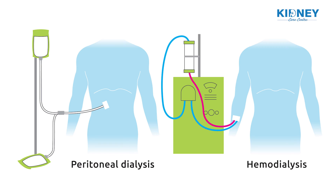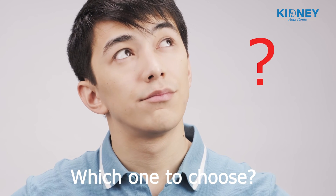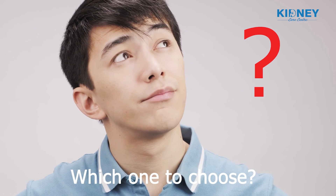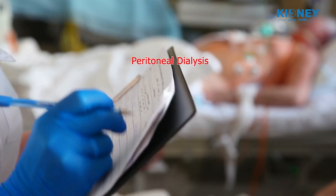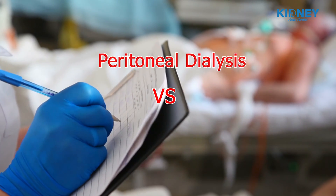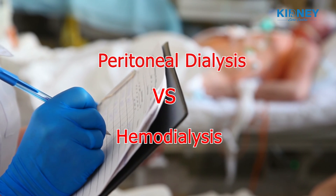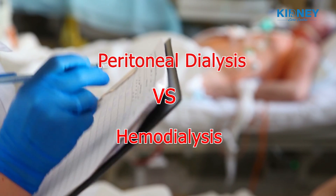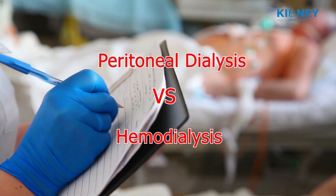Dialysis is of two types: hemodialysis and peritoneal dialysis. Among patients and their relatives, there is a lot of confusion about which is better and who should undergo which type of dialysis. Today we will discuss the difference between peritoneal dialysis and hemodialysis and what is suitable for patients.